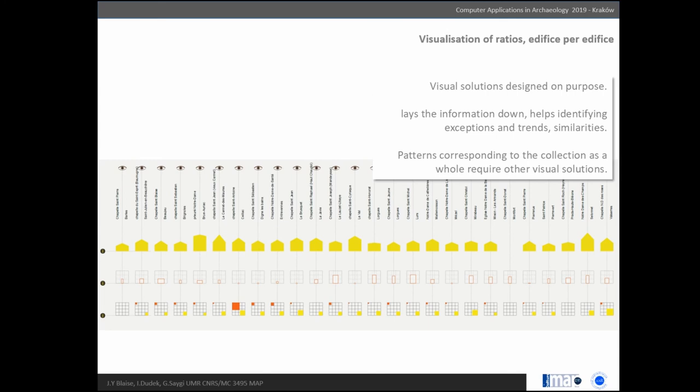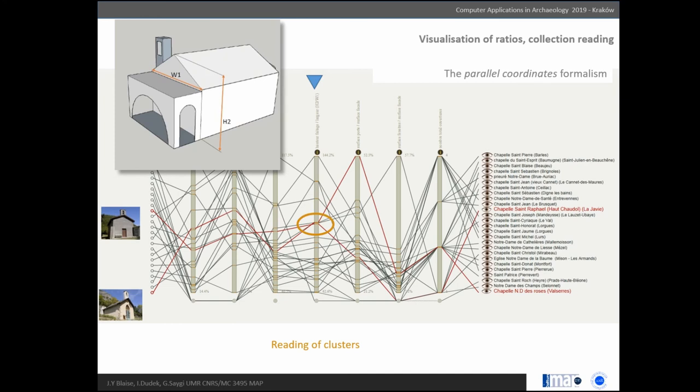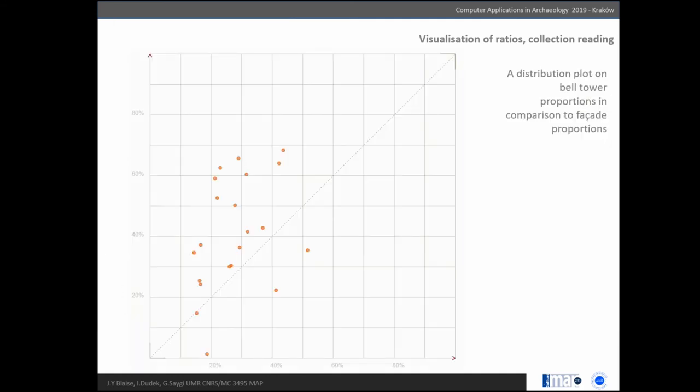For this we tried two classic visual formalisms. The first is parallel coordinates—each of these columns corresponds to one feature. Here you can read clusters like this one with various edifices. Another attempt is a distribution plot. All that is on the left and higher than the diagonal are bell towers that are thinner than the facade; all in the bottom right are flatter. What you see clearly is that only one of these bell towers is in a homotactic relation with the facade.